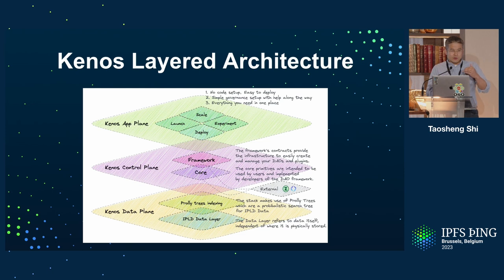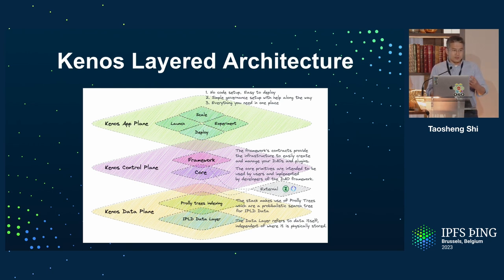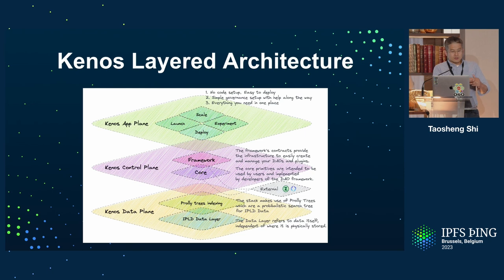If we look into the data operating system, there are three different planes, from bottom to top. The first plane is the data plane — Filecoin, IPFS, and other different storage technology solutions, for example Filecoin proofs. As discussed in yesterday's database panel, all these data solutions are using IPLD data formats. We call all these data storage solutions the data plane.